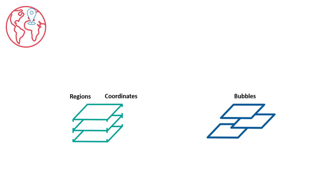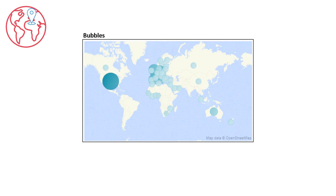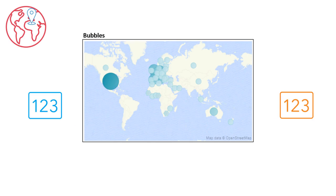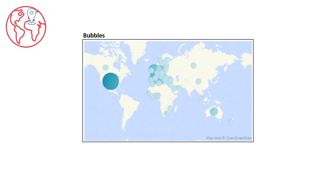Alternatively, geo-bubble maps can be used even when the data is not evenly distributed. This is because bubble maps can compare two measures – one is used for the size of the bubble, and one is used for the color of the bubble. Bubble maps also have another advantage over region maps: the bubble size helps with comparing regions without the size of the region itself causing distortions.